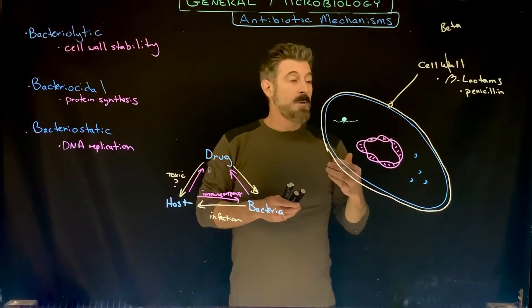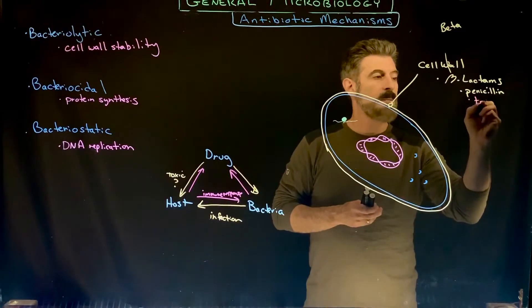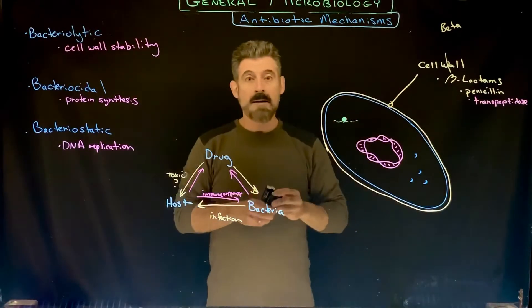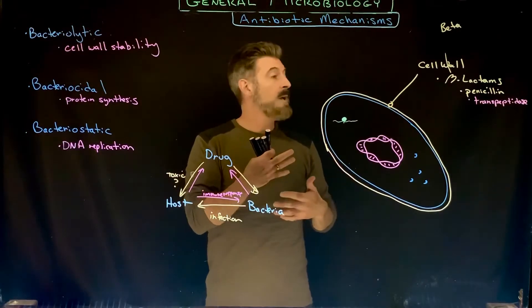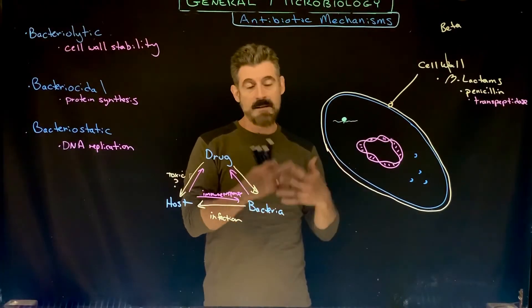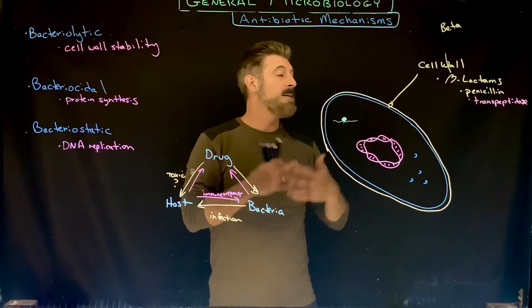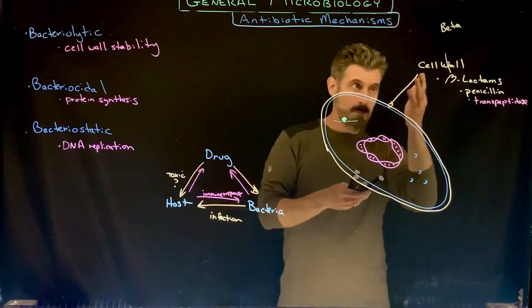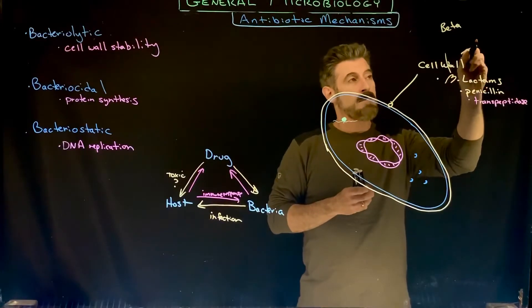Penicillin is going to act by specifically binding to, remember in a previous lecture, the transpeptidase. It will block the ability of the peptide bridges to form between the NAMs, and then you won't be able to stabilize the membrane. Especially if the cell is going to try to divide, it's not going to be able to build any new peptidoglycan, and the cell will potentially then lyse or die.